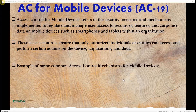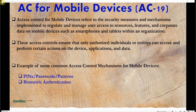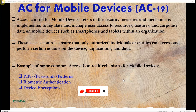Examples of common access control mechanisms for mobile devices include PINs, passwords, and patterns. We also have biometric authentication such as fingerprinting and face recognition. And then we have device encryption — encryption on the data on the device — so if somebody gets hold of the device without authorization, they cannot read the messages or data on these mobile devices.